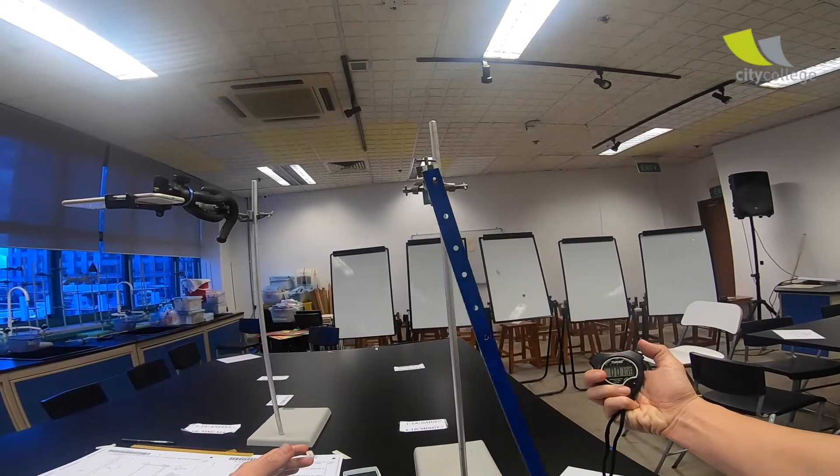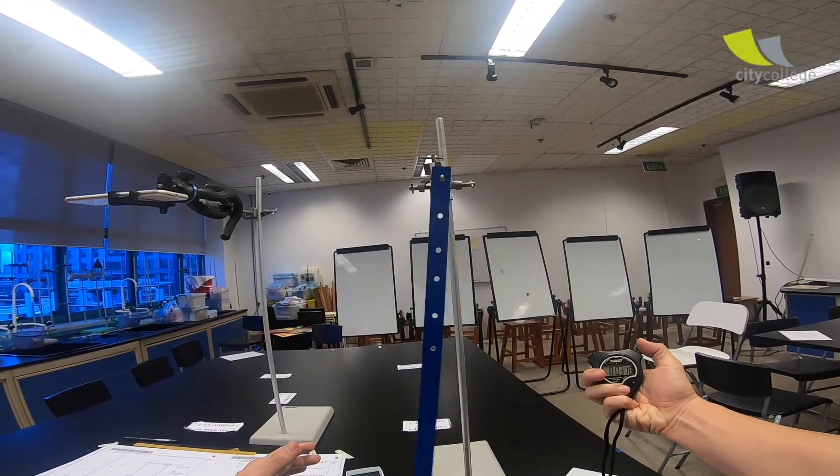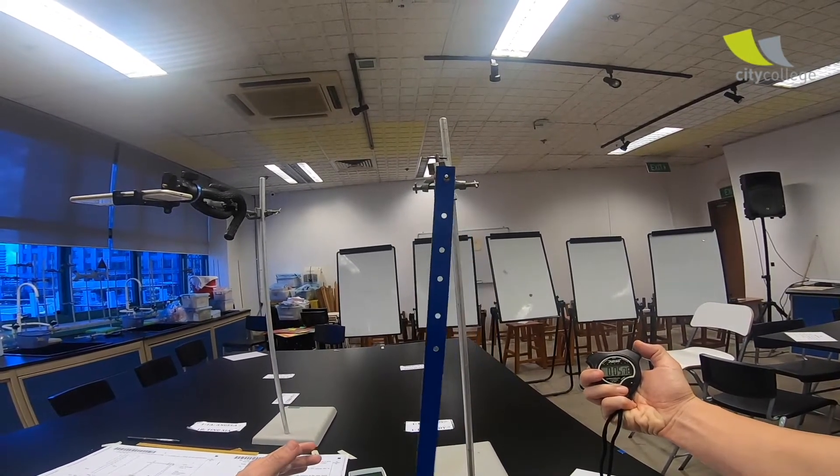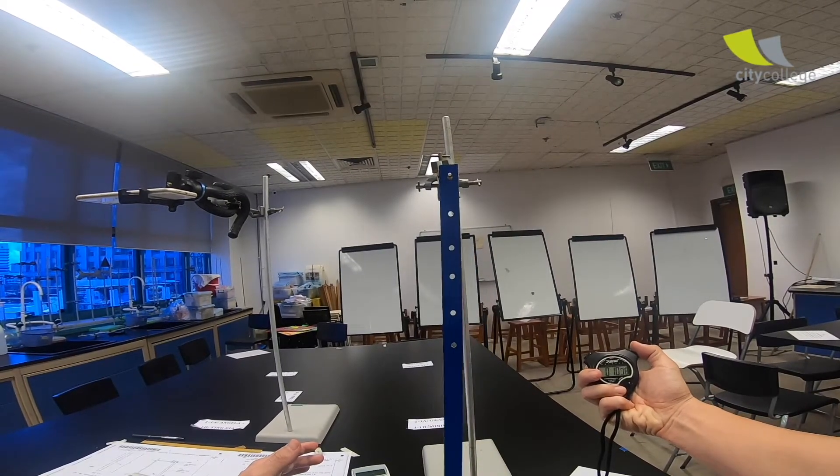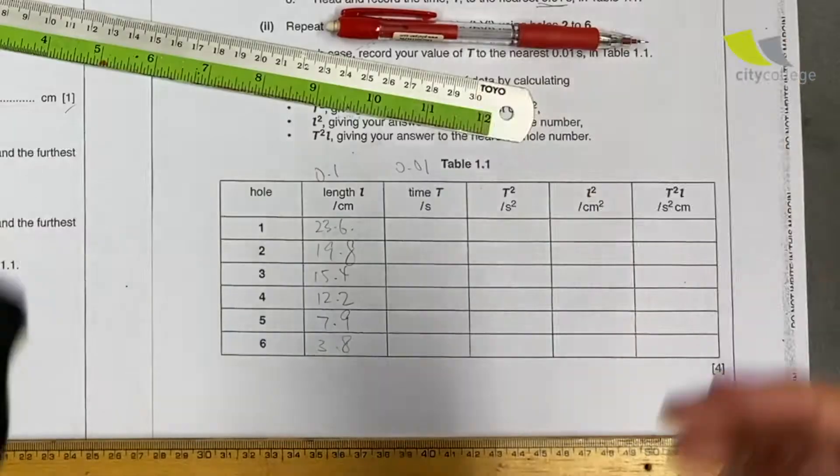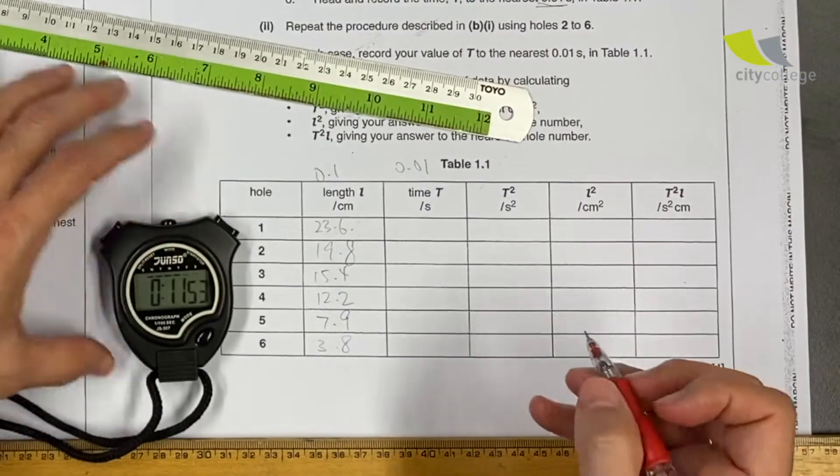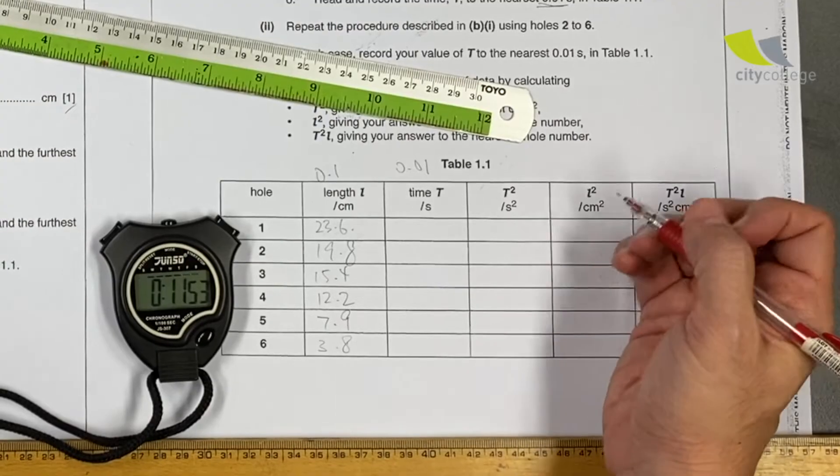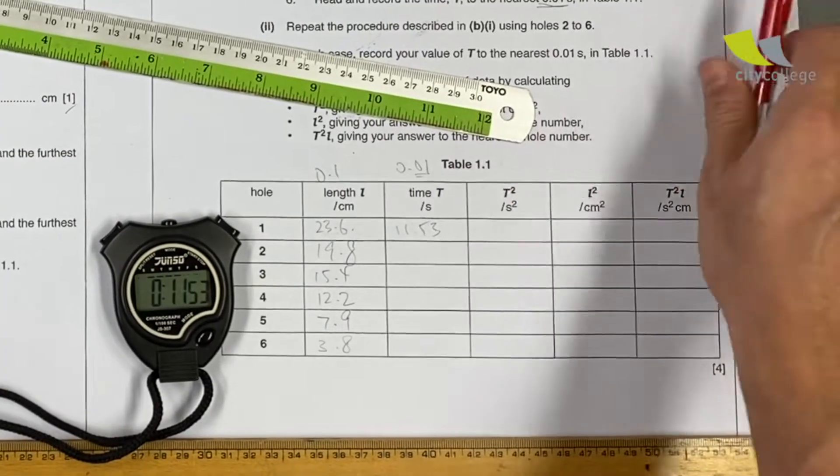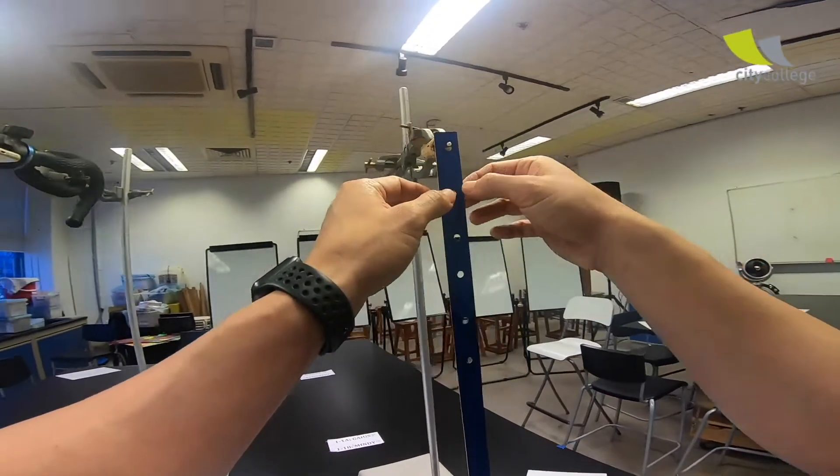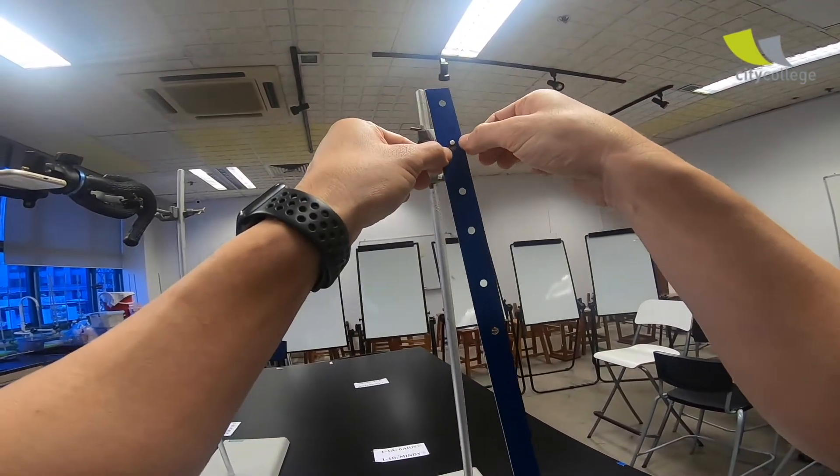1, 2, 3, 4, 5, 6, 7, 8, 9, 10. I have 11.53. So it's 11.53. That's one set. Move it down to the next hole.